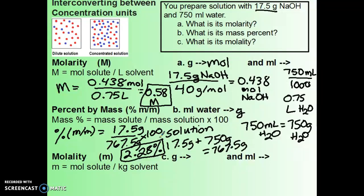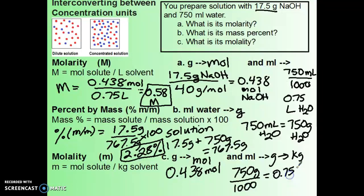Then finally we can look at the molality. Remember we need the grams to be in moles, and we already did that in the first step—we had 0.438 moles of NaOH. We need our milliliters to be converted to kilograms this time. We already know that it's 750 grams from part B, and to go from grams to kilograms we divide by a thousand, giving us 0.75 kilograms. If you'll notice, this is the same number as what we had for our liters. Whenever you have water, your molarity and your molality will actually be equal.